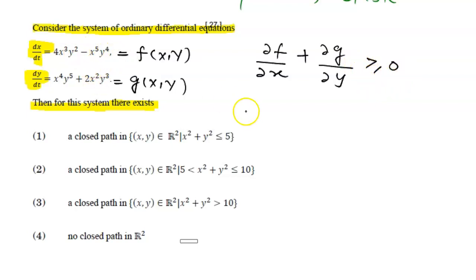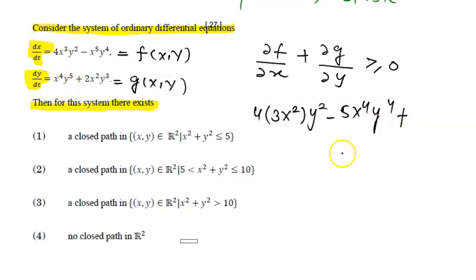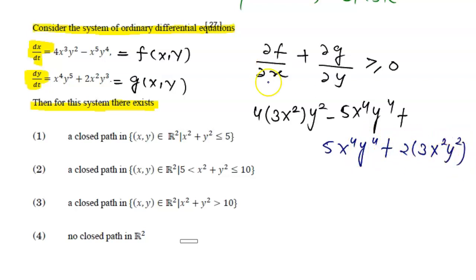Looking at this case, ∂f/∂x gives us 3 times 4, keeping 4 as it is, giving 3x² y², minus 5x⁴ y⁴. Then ∂g/∂y gives us 5x⁴ y⁴, plus 2 times 3, giving x²y². So we simplify all these terms together.